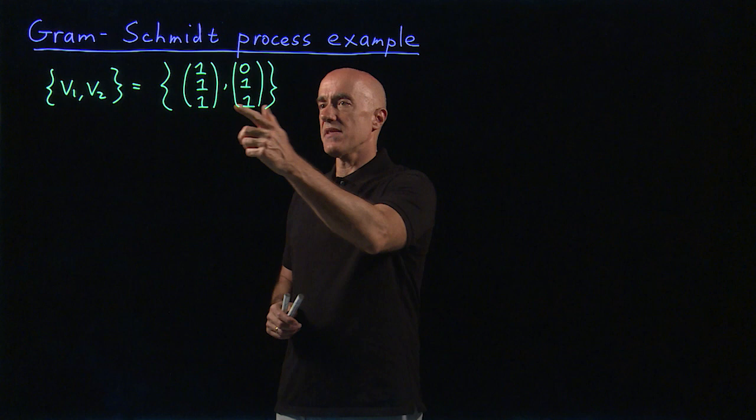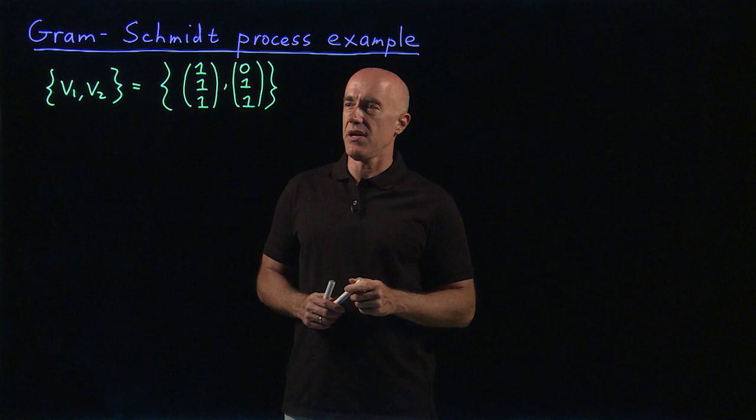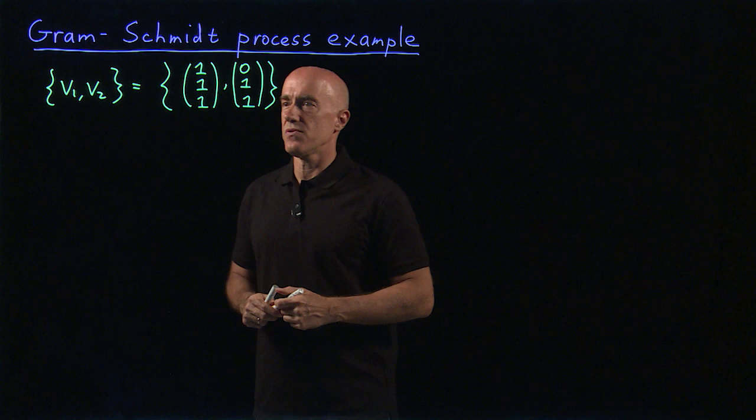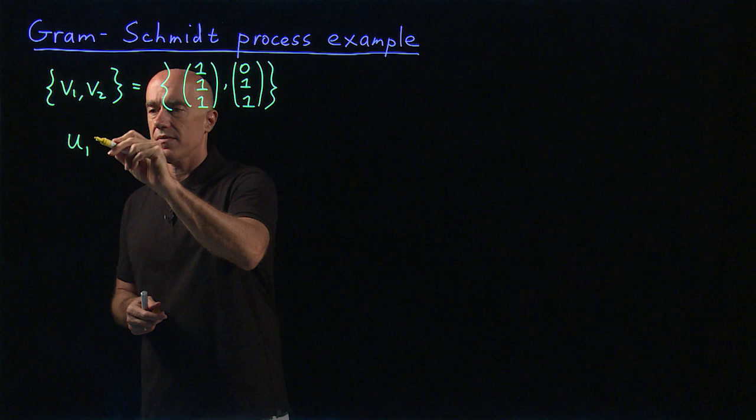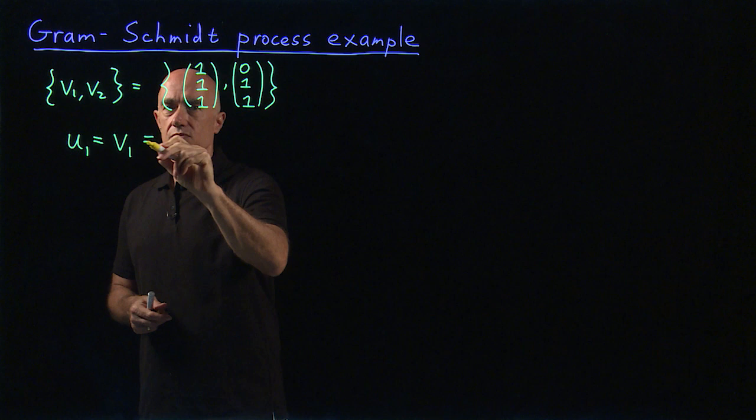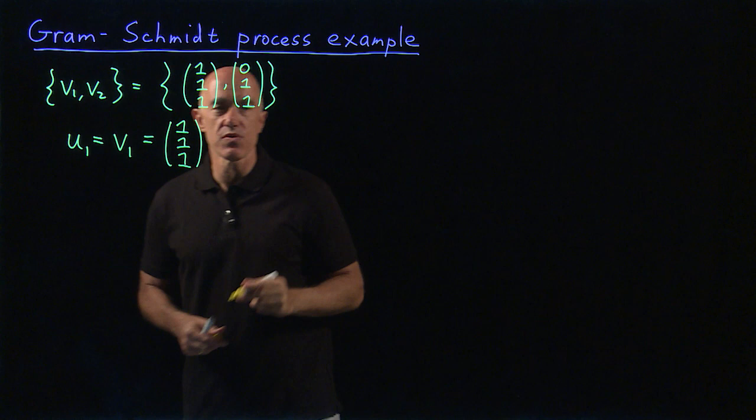So we can use the Gram-Schmidt process here to construct two orthonormal vectors. How do we do that? Remember we take our first vector U1 and just set it equal to V1, which is just our (1,1,1) vector. So we start with U1, and then later we can normalize this so it has unit length.